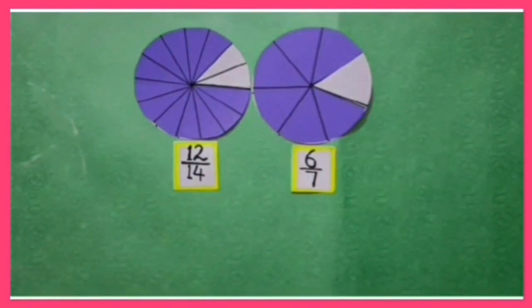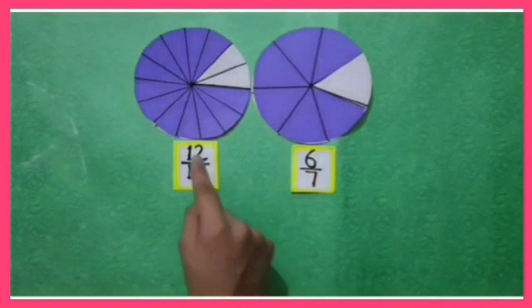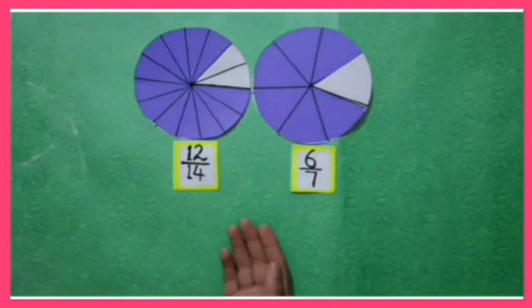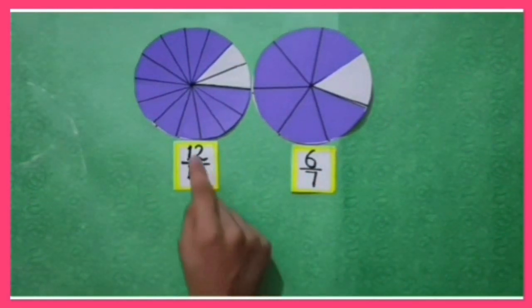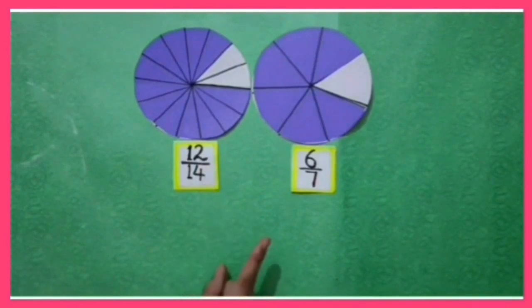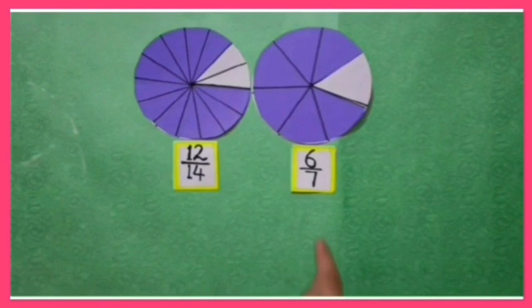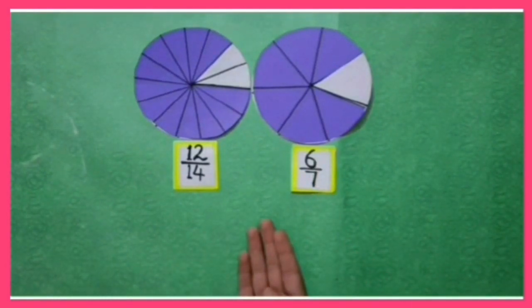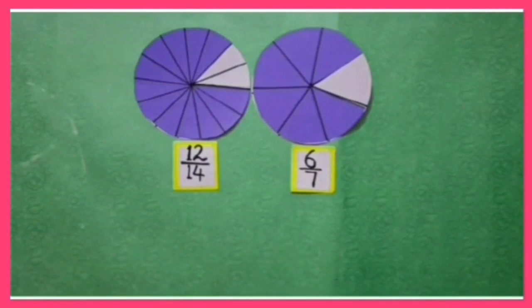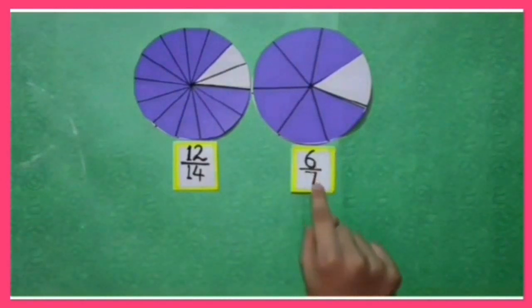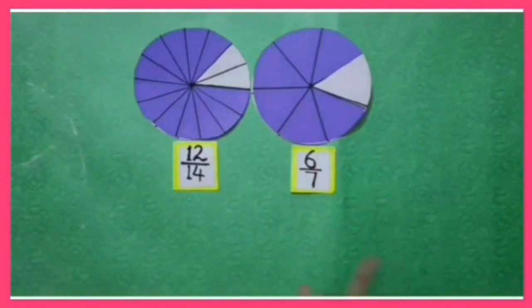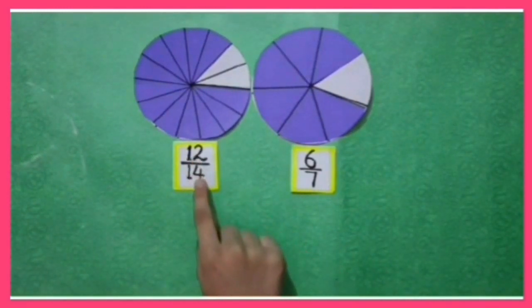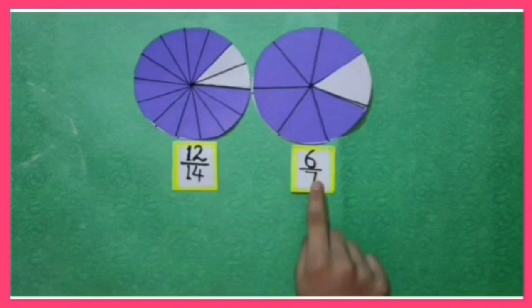So, 12 upon 14 and 6 upon 7 are both equivalent fractions. You can see, 6 upon 7 is the lowest form of 12 upon 14. So 12 upon 14 is not in the lowest form. Now, we will see whether 6 upon 7 is in lowest form or not — we cannot find a further lowest form of 6 upon 7.